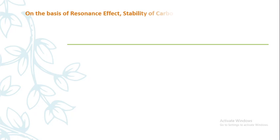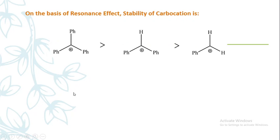On the basis of resonance effect, the stability of carbocations follows this order: the structure with three phenyl rings attached to the carbocation carbon is the most stable, more so than those with two or one phenyl rings, because the phenyl ring provides resonance stabilization.